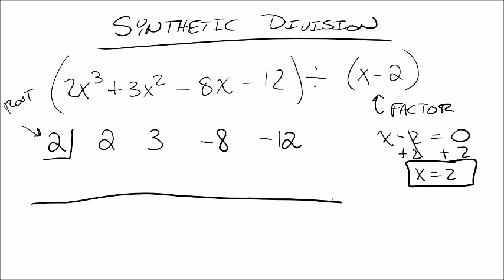So I'm going to draw my line here. First thing you do is bring down your first term. If it's under the line, you multiply with what's in the box. So 2 times 2 gives me 4. If it's above the line, you're going to add it together. So 3 plus 4 would be 7.